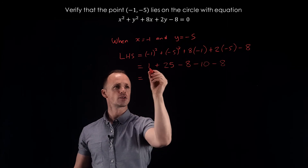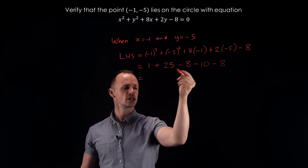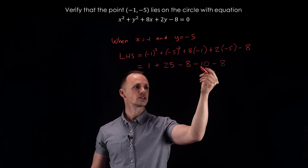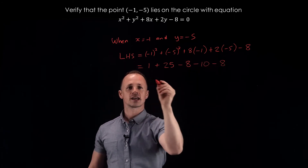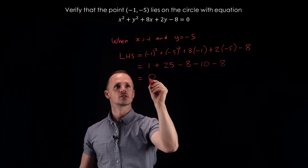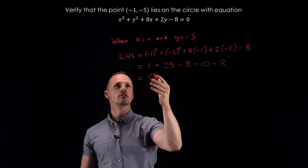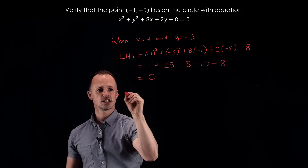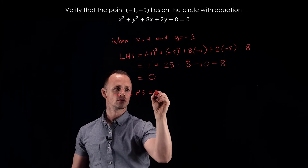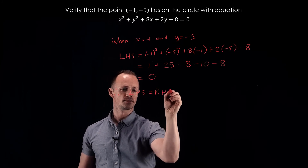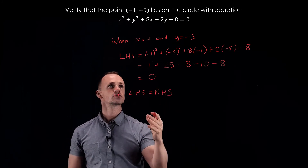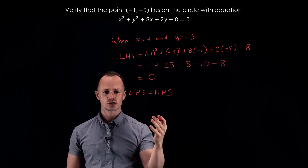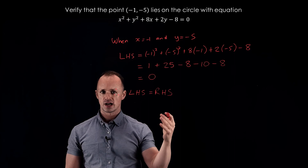So we have 1 plus 25 is 26, subtract 8 gets us to 18, take 10 gets us to 8, take away 8 gets us to zero. The left hand side is zero and the right hand side is zero, so both sides of the equation agree. Therefore the point (-1, -5) does lie on this circle.